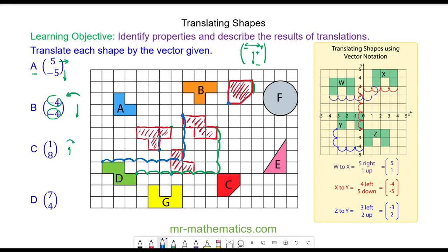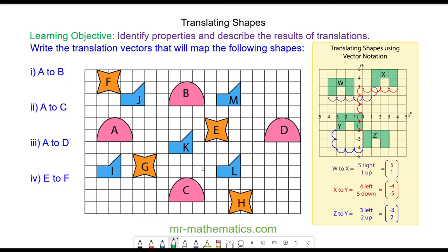We have performed translations — now let's learn how to describe them. To describe a translation we're going to start at object a and choose a vertex, then match the same vertex on object b. We have the horizontal movement on top: we're moving to the right so it'll be positive six. And we're moving up so that'll also be positive three. So the translation vector is (6, 3).